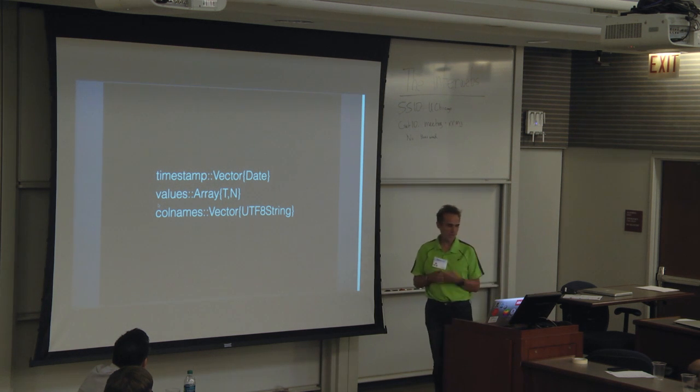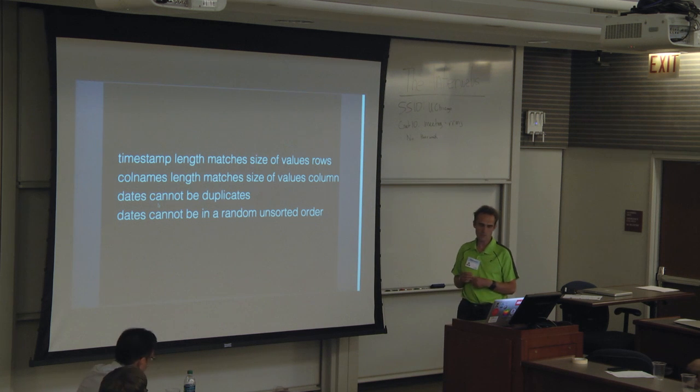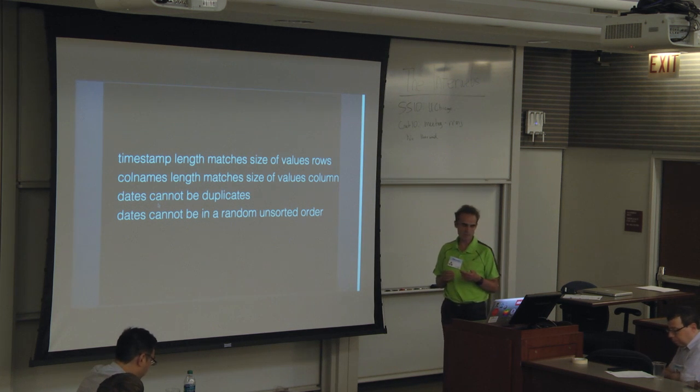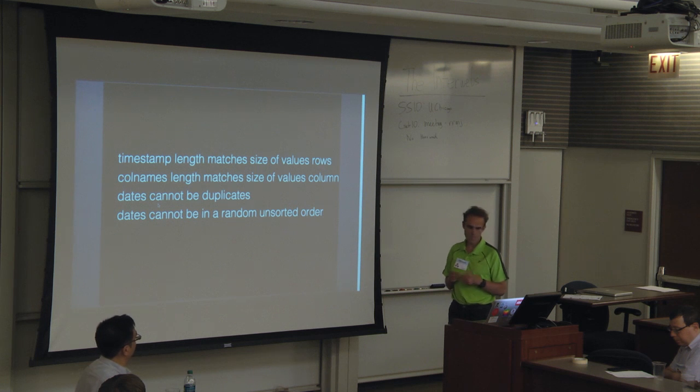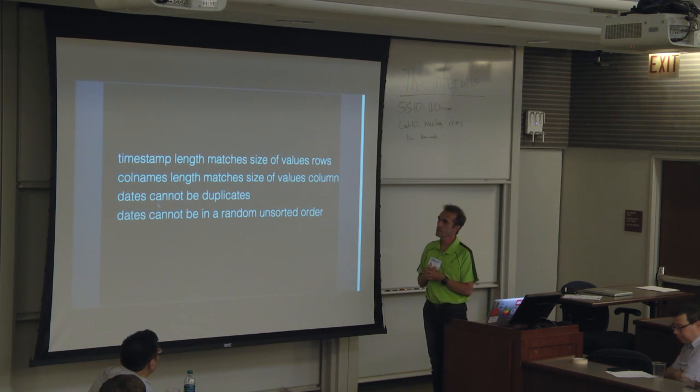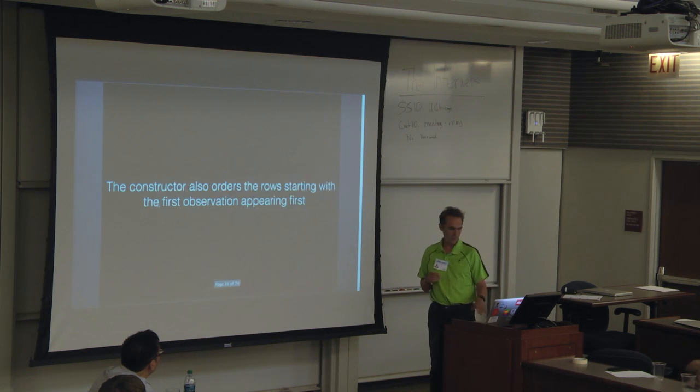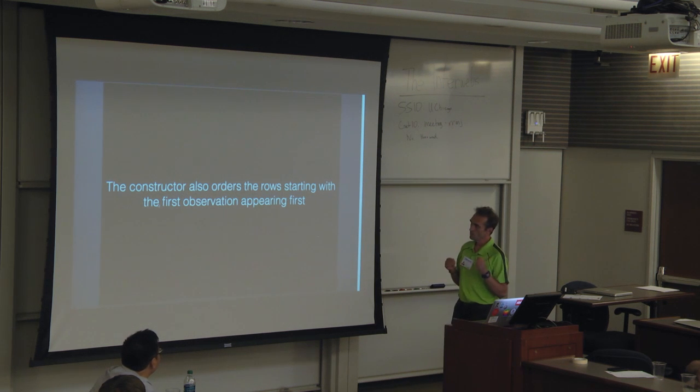Values, which is a specified type dimension, and then column names, which is just a vector of strings. The invariance that we enforce: the length has to match the rows for the timestamp, and the column has to match the size of the column. Those are obvious. Also, dates cannot be duplicated, which isn't true in other packages. And also, dates can't be in some sort of random unsorted order. The constructor also enforces that the rows start with the first observation happening first.